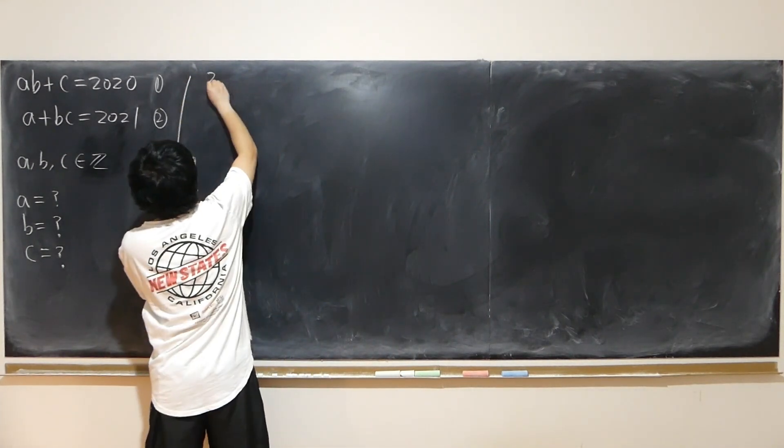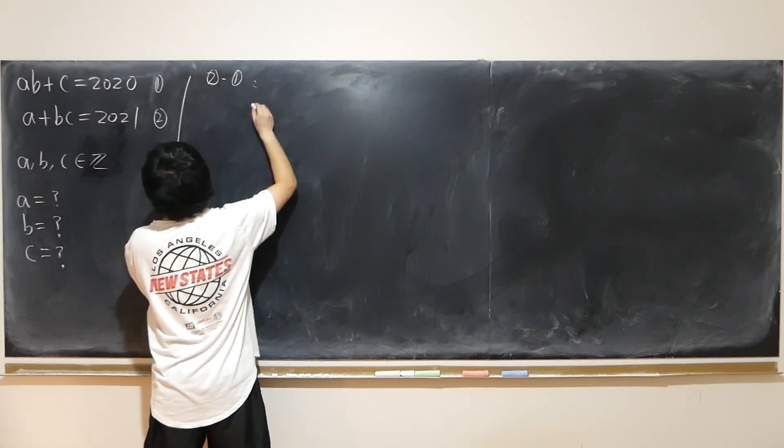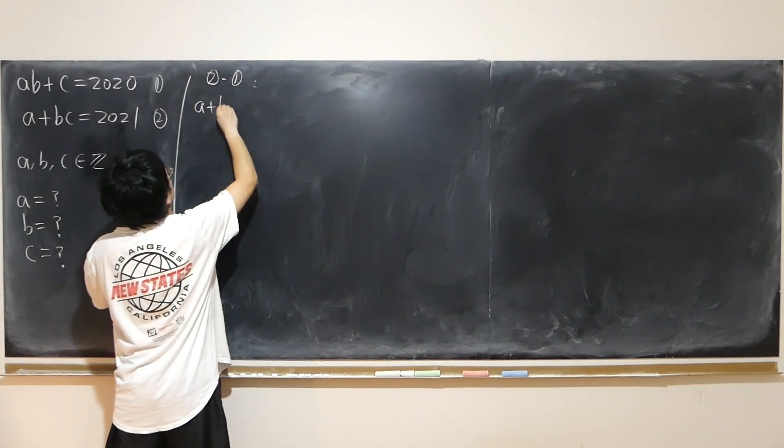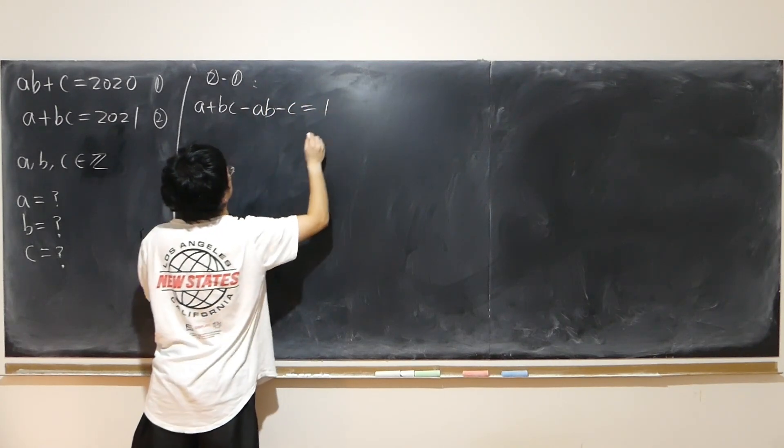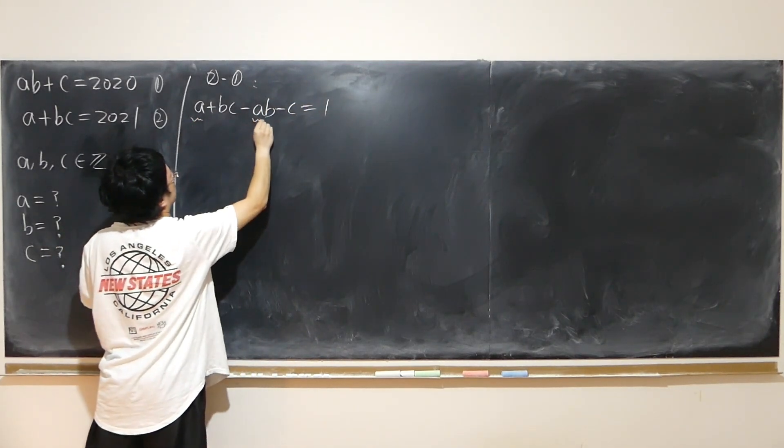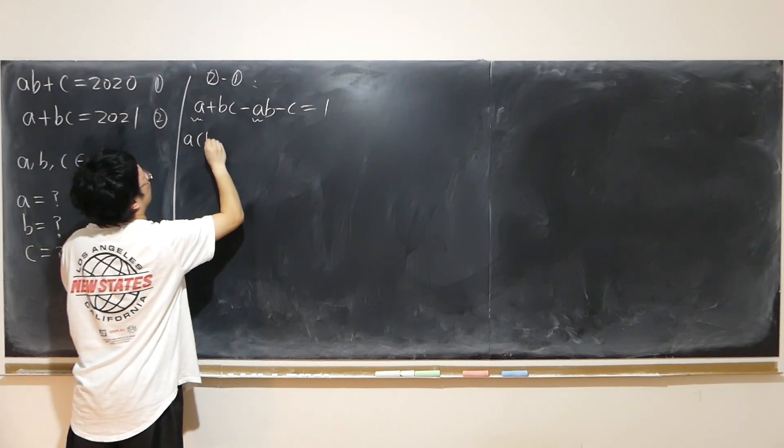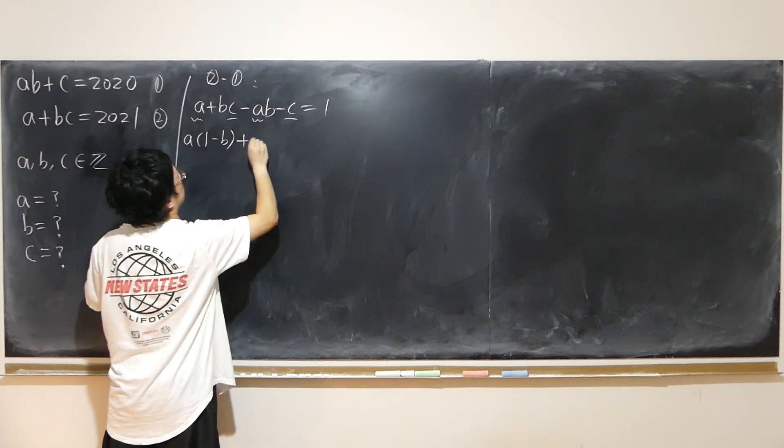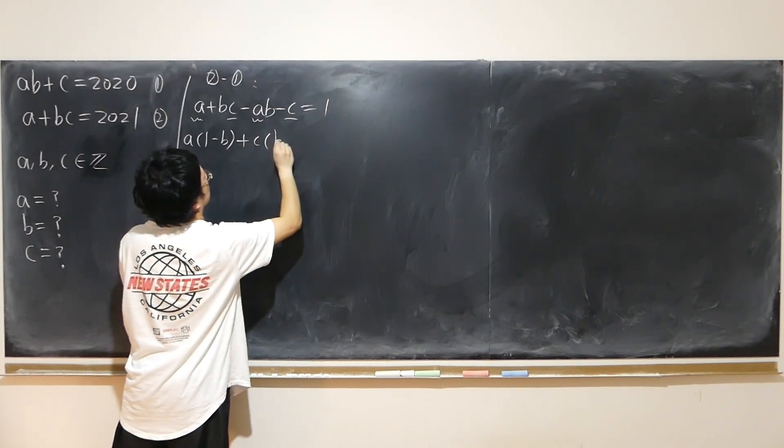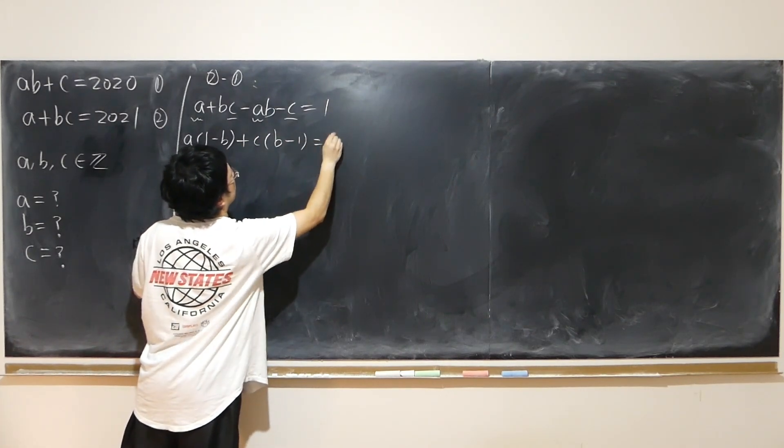So 2 minus 1 will give us a plus bc minus ab minus c equals 1, common factor a. So a times 1 minus b, common factor c. So plus c times b minus 1 equals 1.